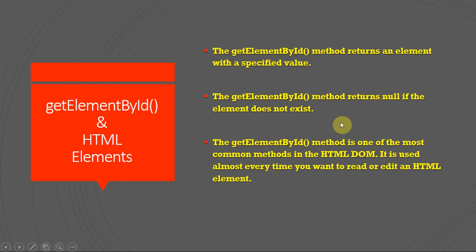The getElementById method is one of the most common methods in the HTML DOM. It is used almost every time you want to read or edit an HTML element. Now go to the following example to use the getElementById method in JavaScript with an HTML element.